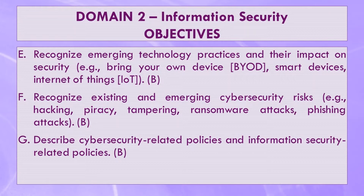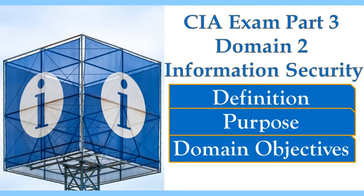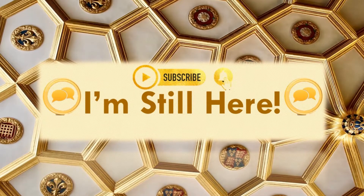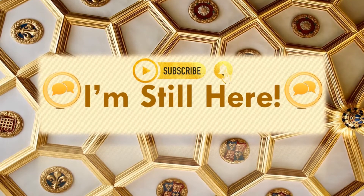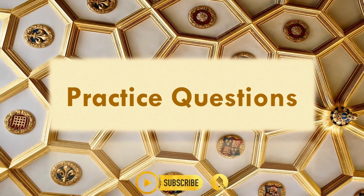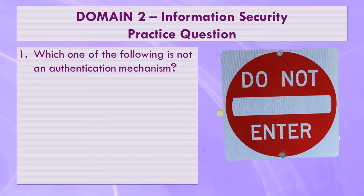I know those are a lot of objectives, but we will get through them and pass Part 3 of the CIA exam. It's time for practice questions and our core lecture. Number one: which of the following is not an authentication mechanism? Watch out for the tricky words — this asks which answer is not an authentication mechanism.